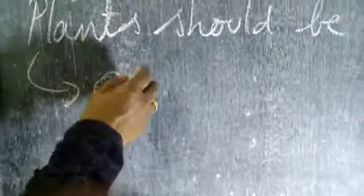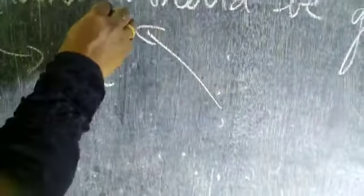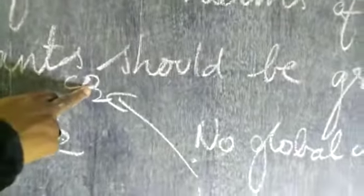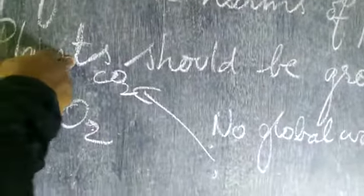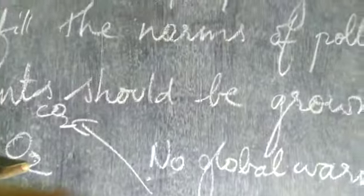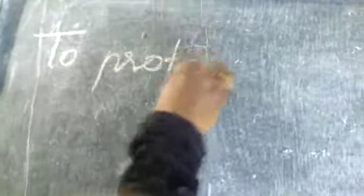You have to grow more plants in your surroundings. When plants grow, they give out oxygen. If more plants are there, they will take in carbon dioxide, which means there will be no global warming. Whatever carbon dioxide comes from vehicle emissions is taken by plants for photosynthesis, and more oxygen is given out for human beings.